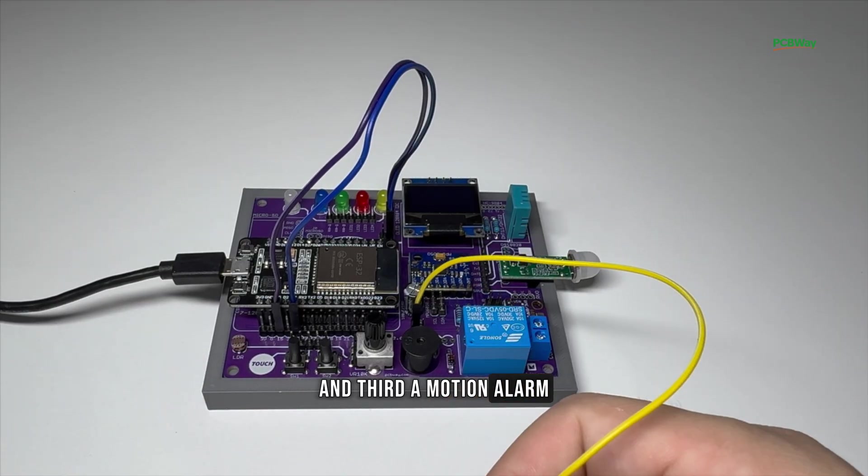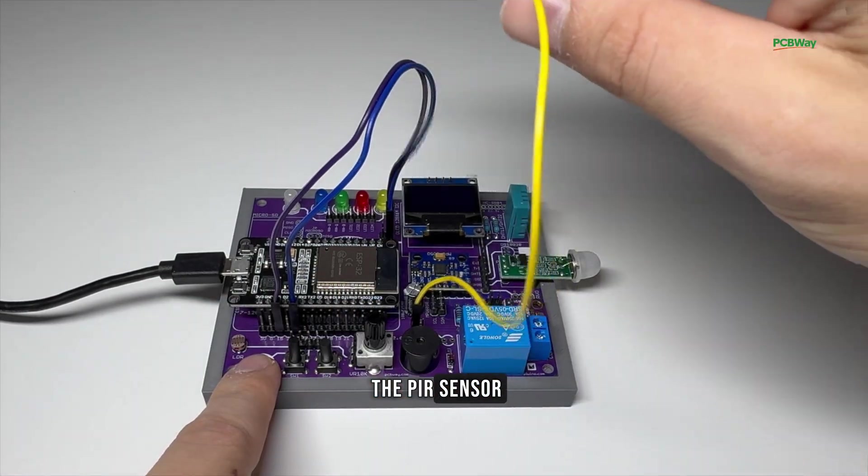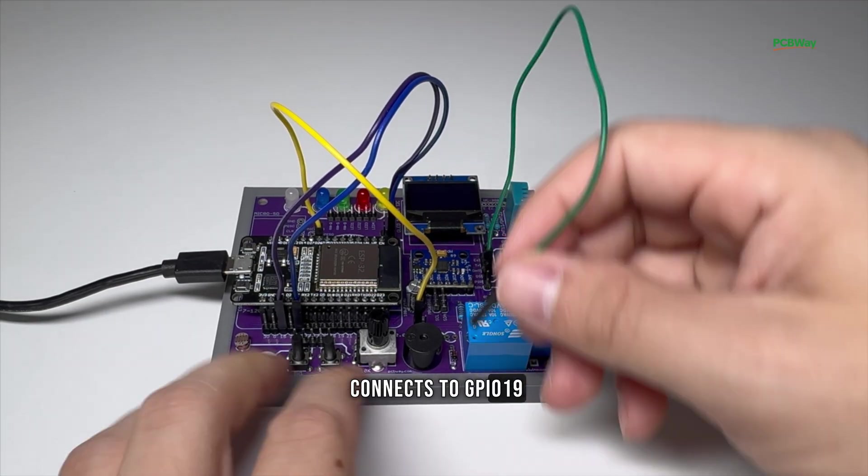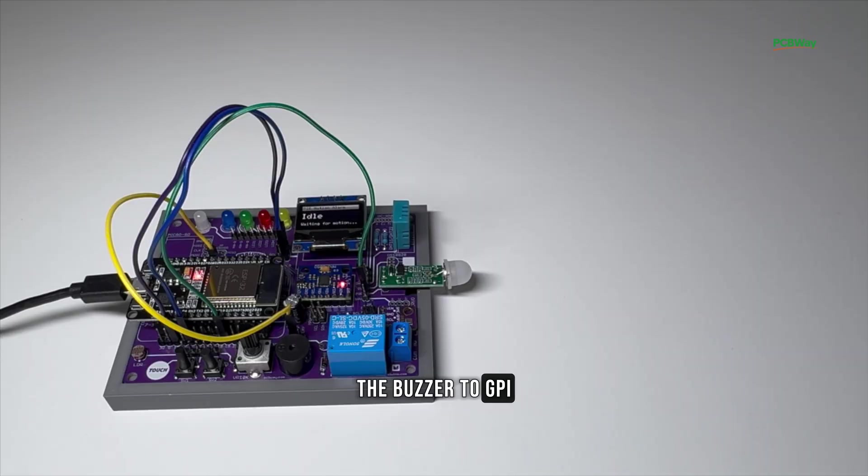And third, a motion alarm. For this, you use the PIR sensor, the buzzer, and the relay. The PIR signal pin connects to GPIO19, the buzzer to GPIO26, and the relay to GPIO21. When motion is detected, the buzzer sounds, and the OLED shows a warning message.